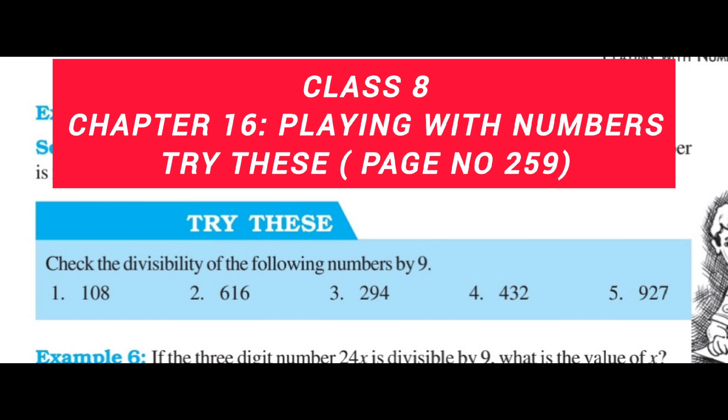Check the divisibility of the following numbers by 9. We know that the divisibility of 9 can be checked when we add all the digits of the number and if it is divisible by 9, then the number is also divisible by 9. First, find the sum of all digits, if it is divisible by 9, then the number is divisible by 9.